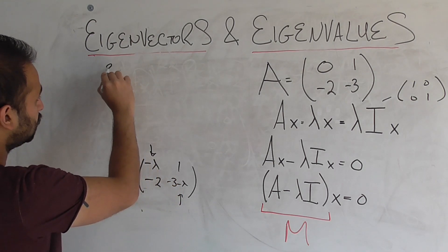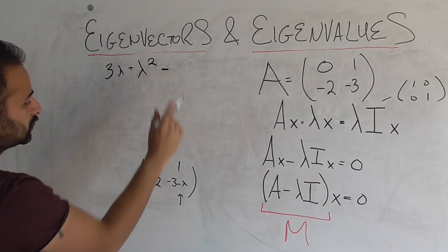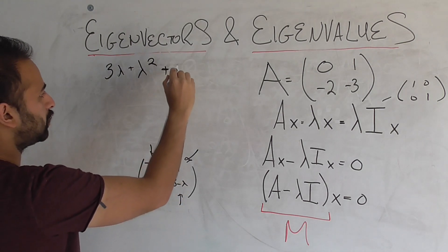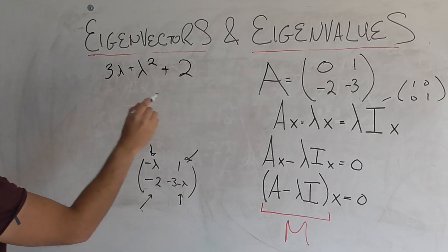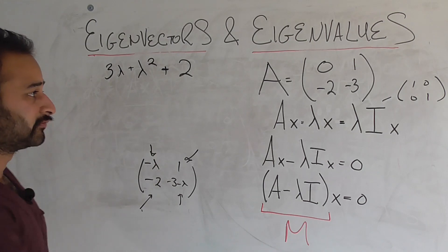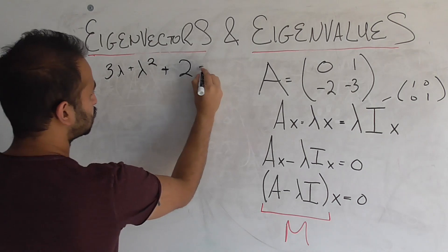minus this element times this element. So minus negative 2 gives us positive 2. So that is the determinant. This polynomial in terms of lambda is the determinant of A minus lambda I. Now we want to make sure the determinant is equal to 0.